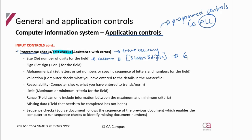Unfortunately, our Sage system doesn't have a set number of digits for our customer numbers, so we can't show you that. But an example would be postal codes — in South Africa, postal codes are four digits. If I wanted to put ten digits, it won't let me carry on past four, and if I try to save it as three, it won't let me go with three. You need to have your four digits.